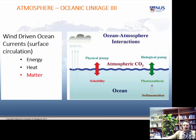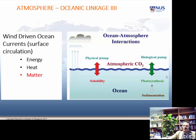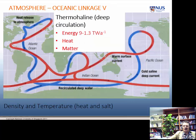Obviously, gases are exchanged between the atmosphere and the ocean — very important for carbon dioxide. You have both physical pumps — solubility and temperature — and biological pumps — photosynthesis. This works both ways: it introduces some gases into the atmosphere and dissolves certain gases out of the atmosphere into the ocean. Surface ocean circulation is very important.